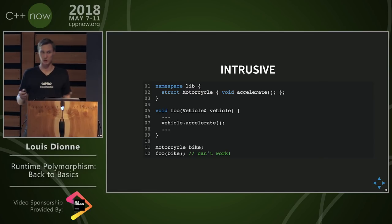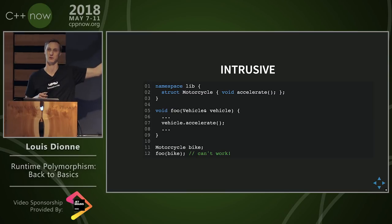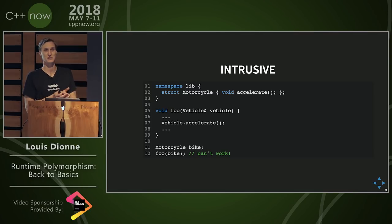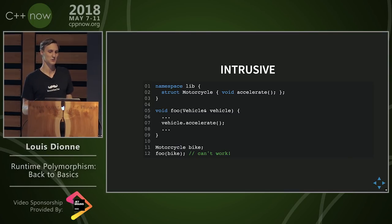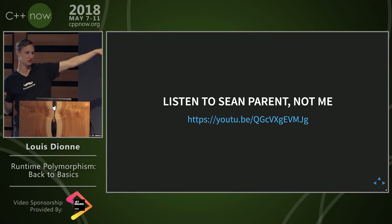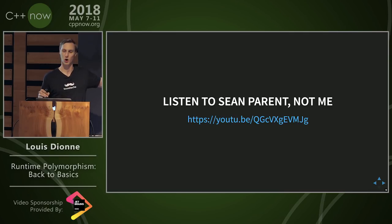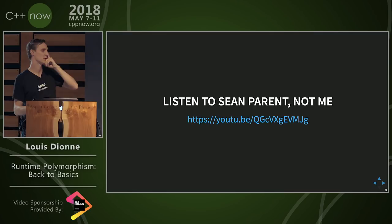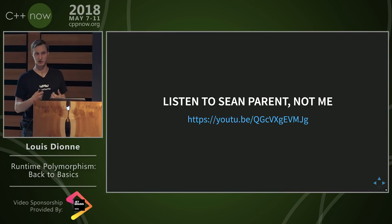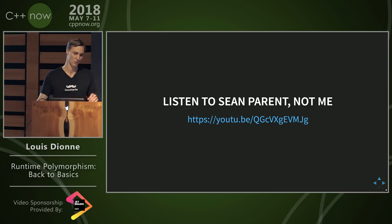And it's intrusive: if you have a type in a third-party library you don't control and you want that type to be usable with your interface, basically what you need to do is have that third-party type inherit from your base class — and that doesn't work because you can't modify it. That's also a really big problem. You should listen to Sean Parent; he's got very good talks about this. I think it's 'Inheritance is the Base Class of Evil' or something like that. It's personally one of the best talks I've seen in my life.